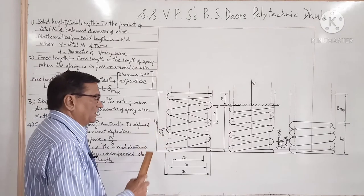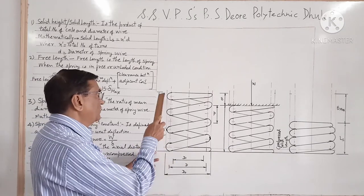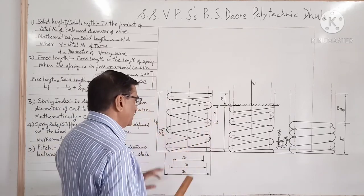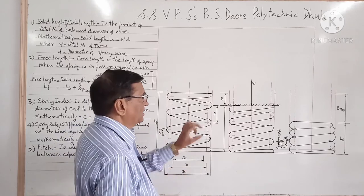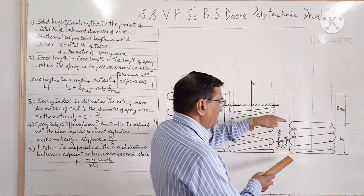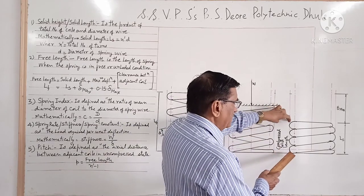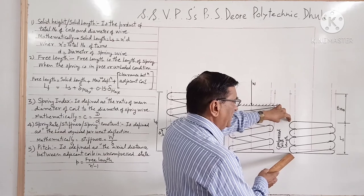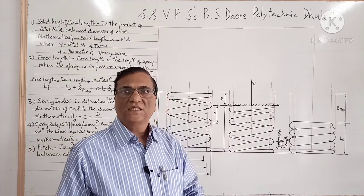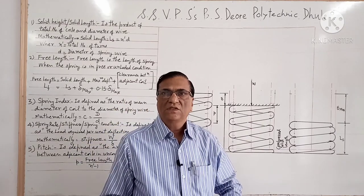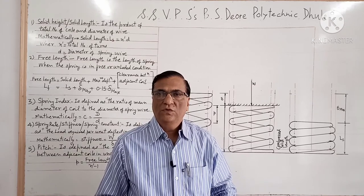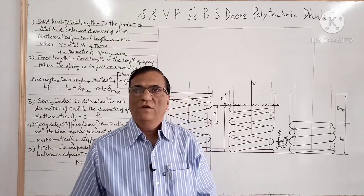In the figure, this is the free length and this is the pitch, this is the wire diameter, this is the mean coil diameter, this is the deflection under load W, and this is the completely compressed or solid length, and this is the maximum deflection. So in this session we have studied the terms related to helical coil compression spring. We will meet in the next session. Thank you very much.